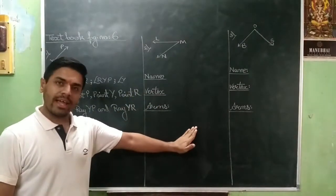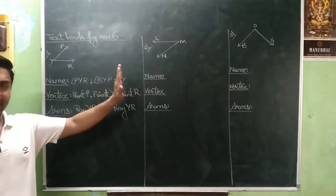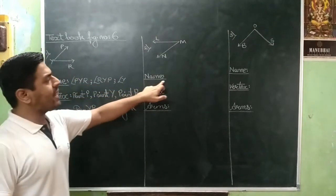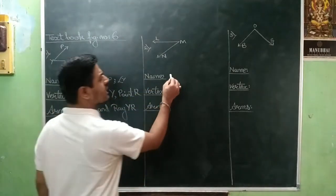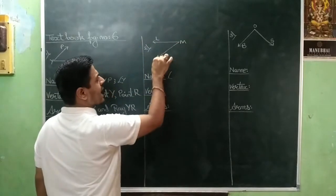Now let us move to the second. Second piece, same pattern in class. First we will name it, followed by vertex, followed by arms. So in the naming process, all the three types we will be writing. First, angle L and N.